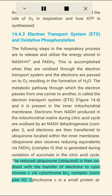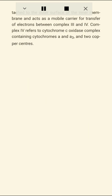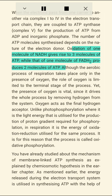The reduced ubiquinone (ubiquinol) is then oxidized with the transfer of electrons to cytochrome C via cytochrome BC1 complex (complex III). Cytochrome C is a small protein attached to the outer surface of the inner membrane and acts as a mobile carrier for transfer of electrons between complex III and IV. Complex IV refers to cytochrome C oxidase complex containing cytochromes A and A3 and two copper centers. When the electrons pass from one carrier to another via complex I to IV in the electron transport chain, they are coupled to ATP synthase complex V for the production of ATP from ADP and inorganic phosphate. Oxidation of one molecule of NADH gives rise to three molecules of ATP, while that of one molecule of FADH2 produces two molecules of ATP.